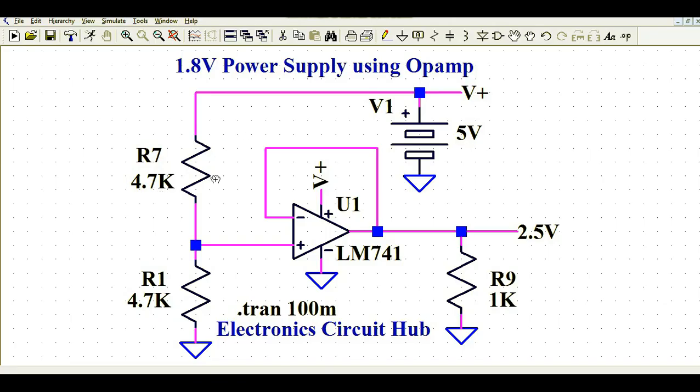If I talk about the voltage divider, we're going to get 2.5 volt at this node when my input is 5 volt. This 2.5 volt is directly connected to the non-inverting terminal of the op amp. Then if you look, my negative terminal is connected to the output.